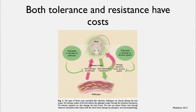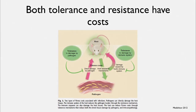Both tolerance and resistance have costs. For example, malaria parasites circulating in the blood can directly damage the host. The host can try to tolerate them or try to resist them. The damage is then caused by the host immune system, and there must be some kind of tolerance response to limit the damage caused by the immune system itself.